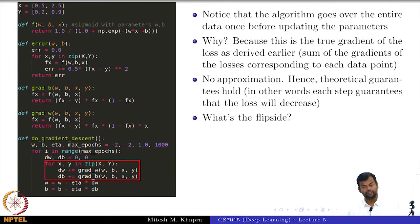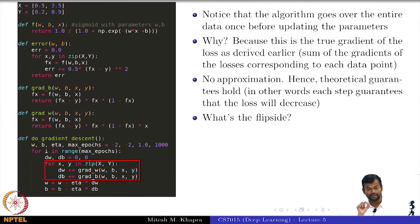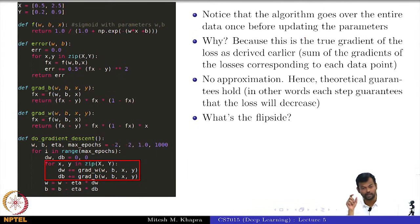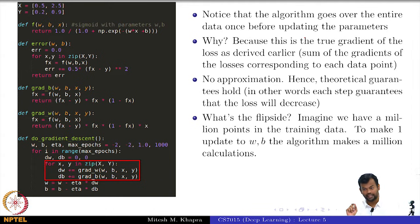But what is the flip side? If you have millions of points, you go over all those million points and make just one update. Imagine the consequence when you are in a plateau region — even with momentum, your movement in the plateau is relatively smaller. You are going over these million points and making that tiny delta update. The algorithm takes a million calculations and then makes one tiny update to your w.